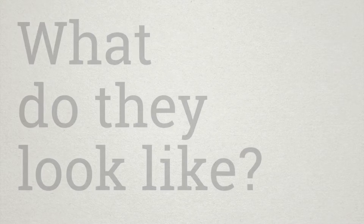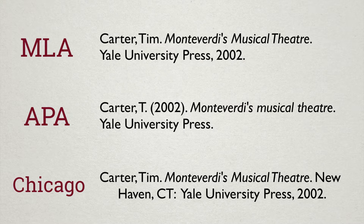What do they look like? Citations can look different depending on what style is used to create them, but they usually contain similar information. Some popular styles include MLA, APA, and Chicago. In the discipline of music, we use Chicago style.